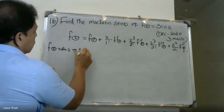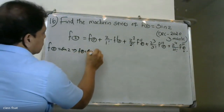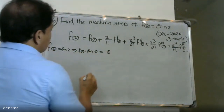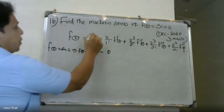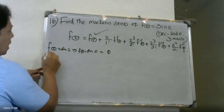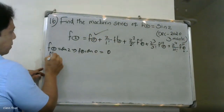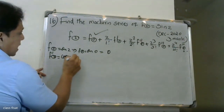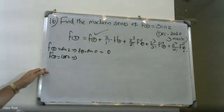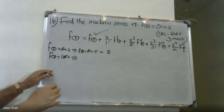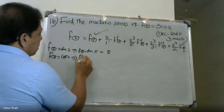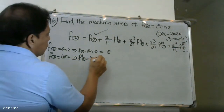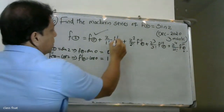F of 0: substituting z equals 0 into sine z gives sine 0, which equals 0. F dash — the first derivative — of sine z is cosine z, so F dash of 0 equals cosine 0, which equals 1.